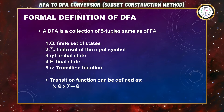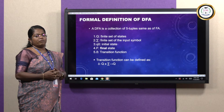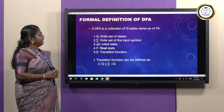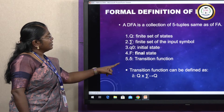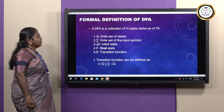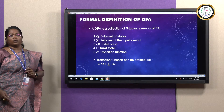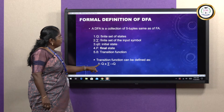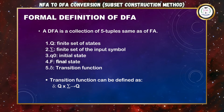Now let us see the formal definition of Deterministic Finite Automata. It is defined using five tuples: Q, sigma, Q naught, F, and transition function delta. Capital Q represents the finite set of states. Sigma is the set of finite input symbols. Q naught is the initial state. F is the final state. Delta is the transition function — from one state, using a single input symbol, we move to the next state.